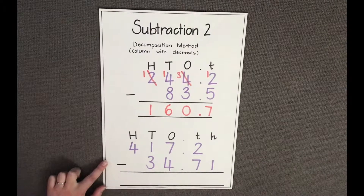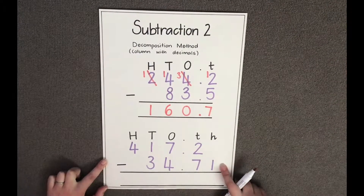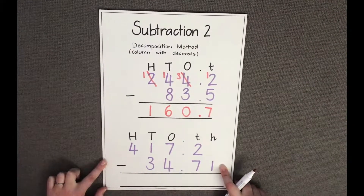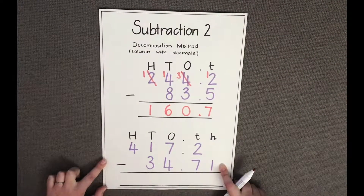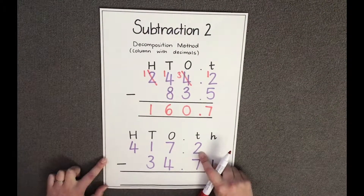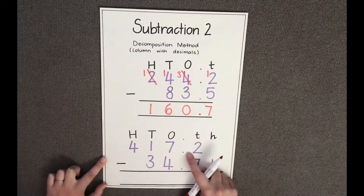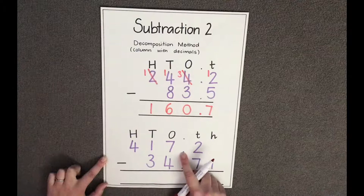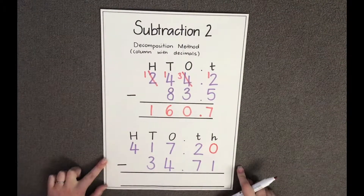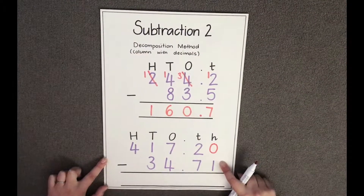Let's try a slightly harder example: four hundred and seventeen point two take away thirty four point seven one. When subtracting decimals with a different number of decimal places, it is important to make them the same by identifying that the two tenths here is the same as having twenty hundredths, and therefore the point two is the same as having point two zero. Now we have decimals with the same number of decimal places and we can begin our subtraction.